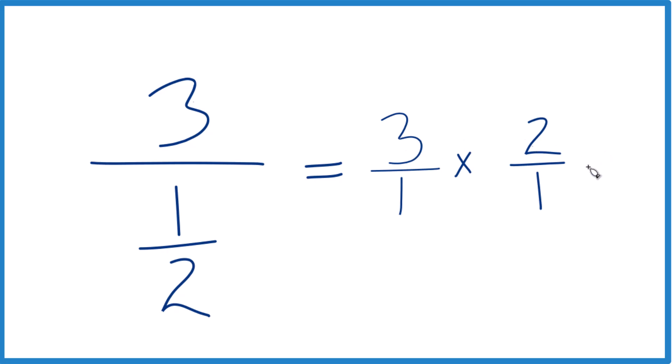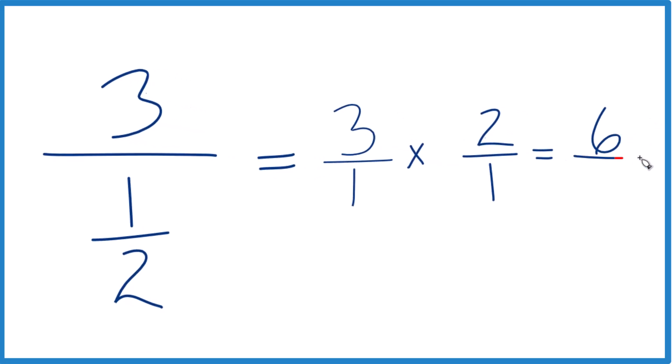3 times 2 equals 6, 1 times 1 is 1, and 6 over 1, that equals 6. So 3 divided by 1 half, our whole number divided by a fraction, that's 6.